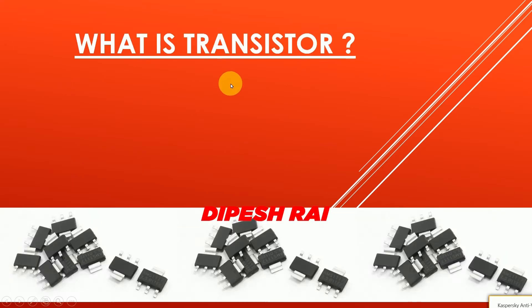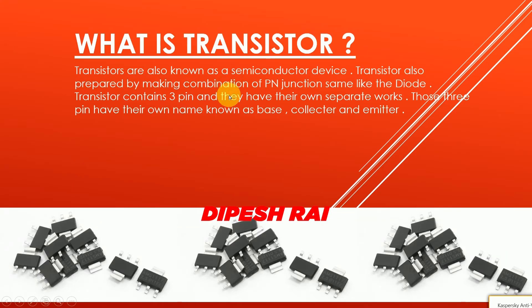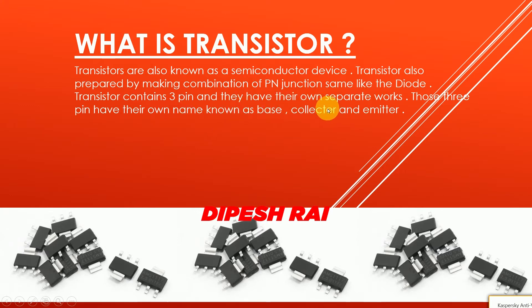What is a transistor? Transistors are also known as semiconductor devices. Transistors are prepared by making a combination of P and N junctions, same as in the diode. A transistor contains three pins, and they have their own names: base, collector, and emitter.